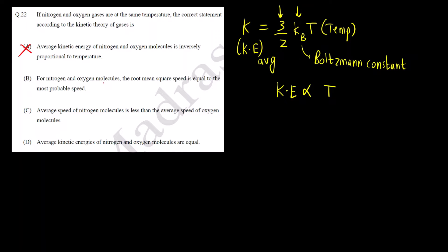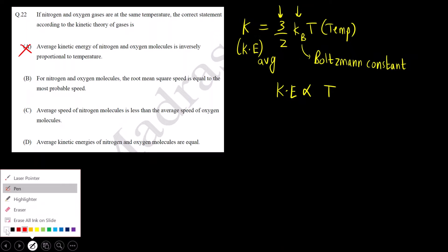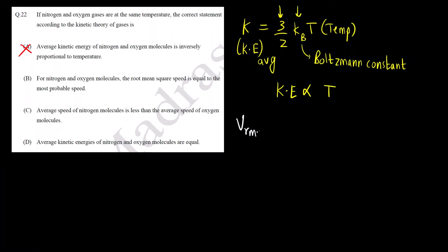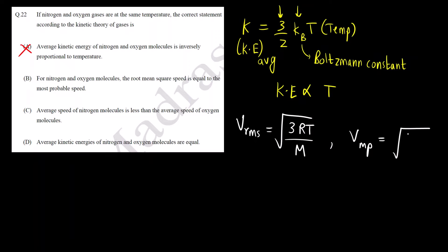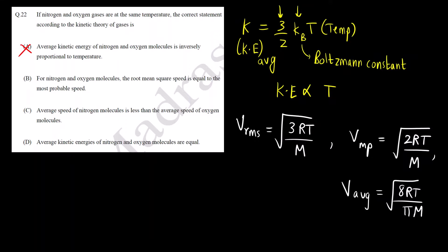Second option: for nitrogen and oxygen molecules, the RMS speed is equal to the most probable speed. The formula for RMS speed is V_RMS = √(3RT/M), and the formula for most probable speed is V_mp = √(2RT/M). You can also remember that average velocity is √(8RT/πM).